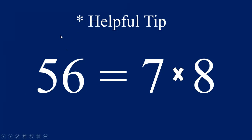Do you see the pattern? Yes, these numbers count in order: 5, 6, 7, 8. So the answer to 7 times 8 is 56, and the answer to 8 times 7 is also 56. Switching the order helps us see this pattern. So if you have the equation 7 times 8, just think — they count in order: 5, 6, 7, 8.